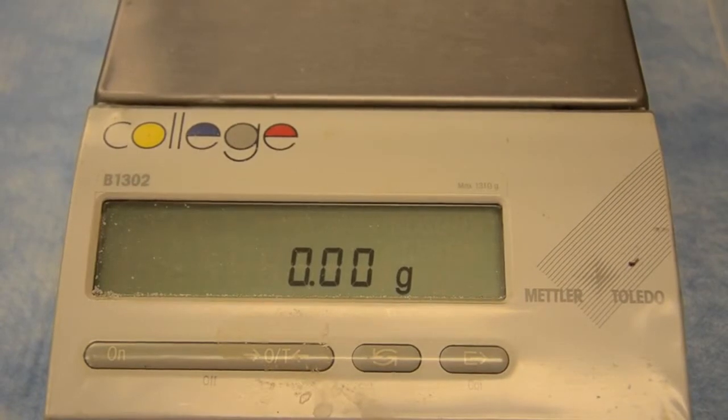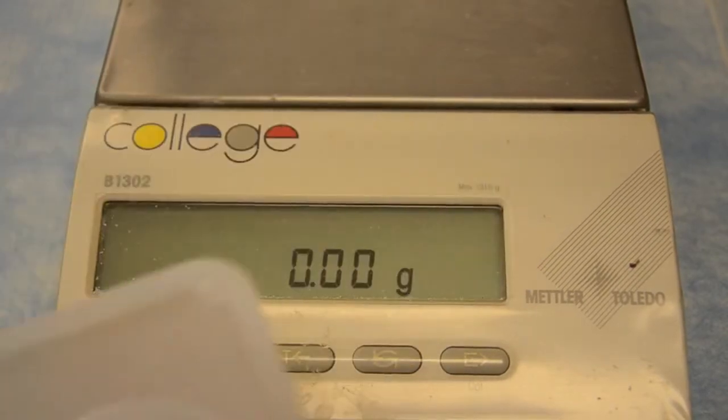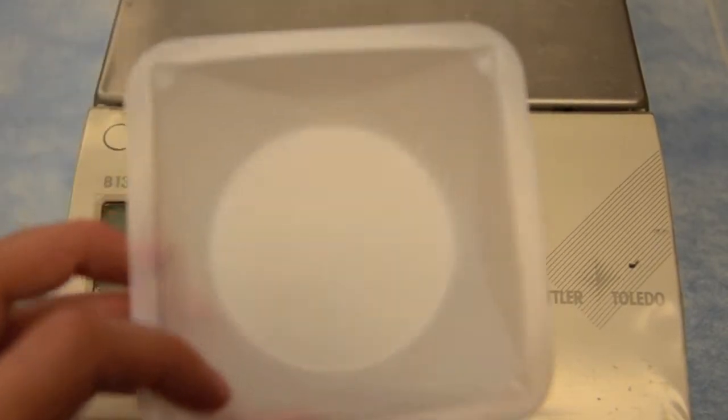If you ever want to use the balance to measure out a precise amount of material, here's how you'll do it. You'll choose an appropriate weigh boat size. We're going to measure out 5 grams of table salt, so we don't need a very big weigh boat.